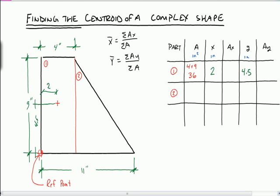Let's look at part two now. Part two is a triangle. And it is 7 inches on the base times 9 high divided by 2 or 31.5 inches squared.